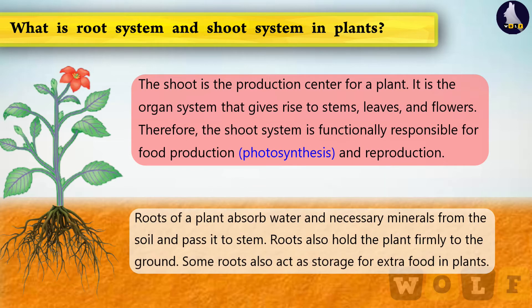Roots of a plant absorb water and necessary minerals from the soil and pass it to the stem. Roots also hold the plant firmly to the ground. Some roots also act as storage for extra food in plants.